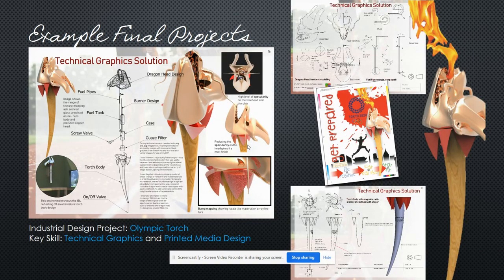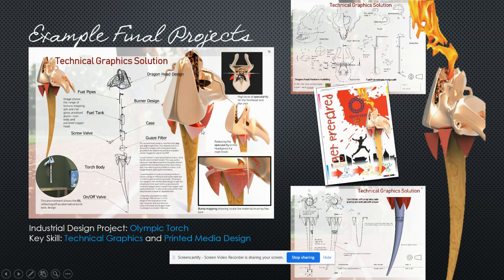Another project from last year was the redesign of the Olympic torch. This student was applying for an industrial design course where he had to design products and needed a portfolio. You can see he used his 3D modeling skills, his technical graphic skills, and his visual media skills — he created both printed and digital media, including a poster that went alongside his redesign of the Olympic torch. One of the main reasons for doing Advanced Graphic Design is because you've got a course in mind and you want a portfolio of work to help you apply.